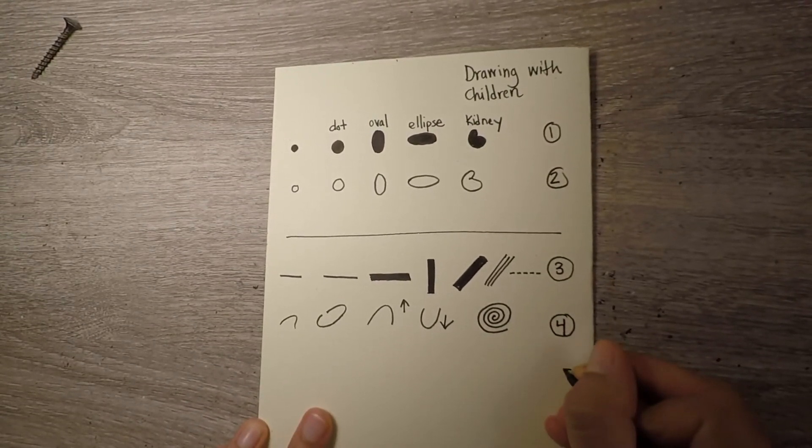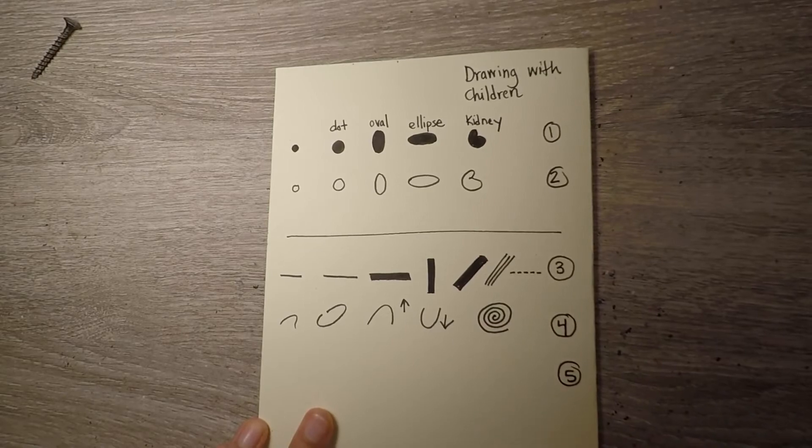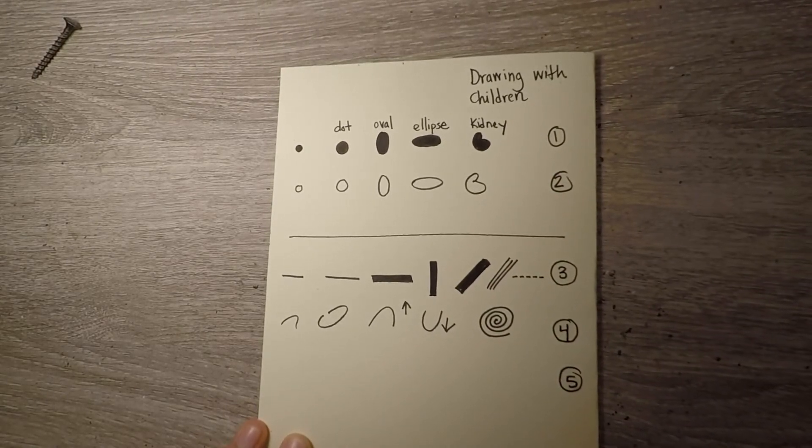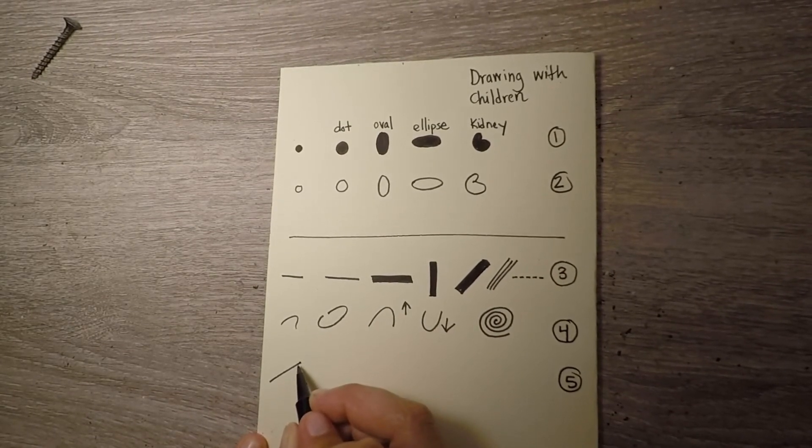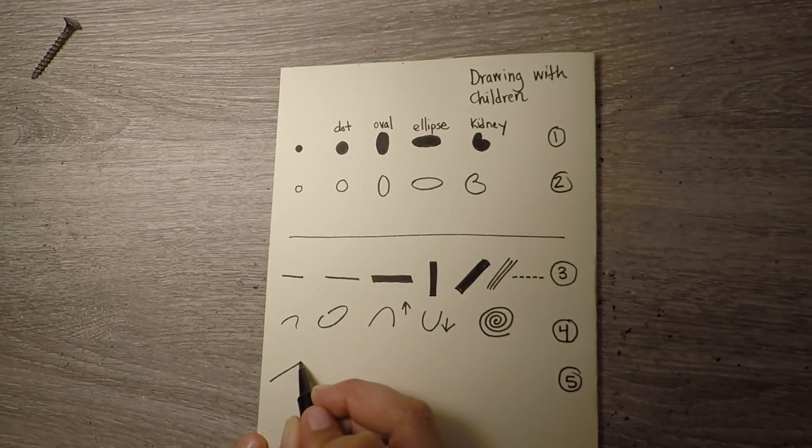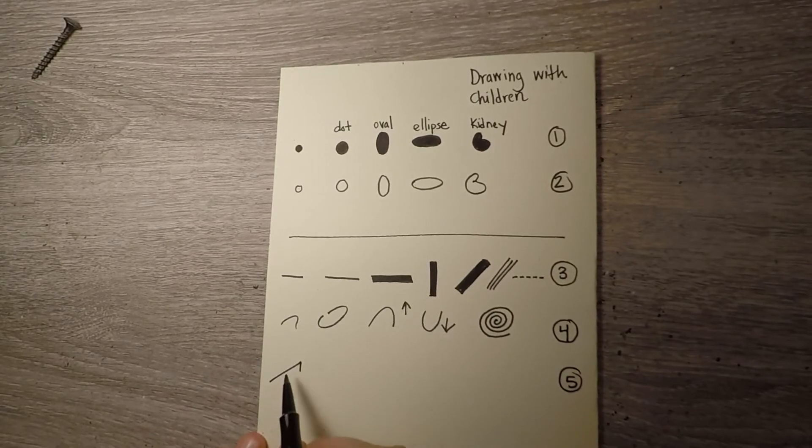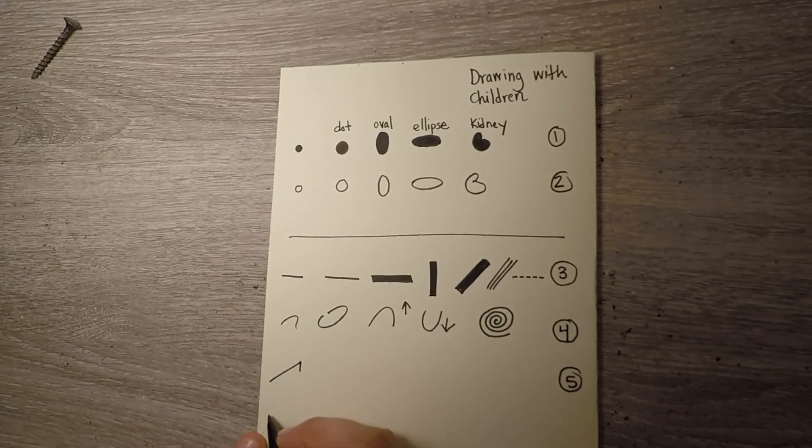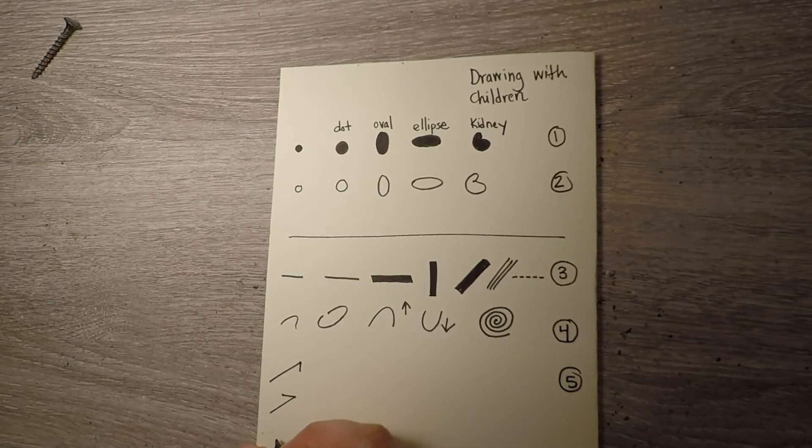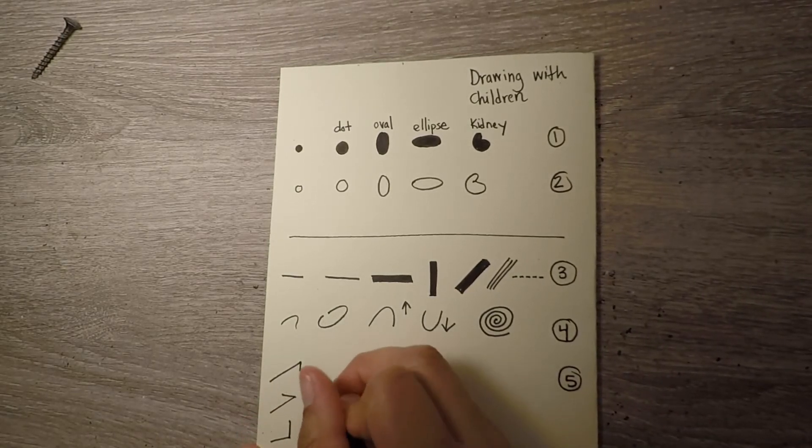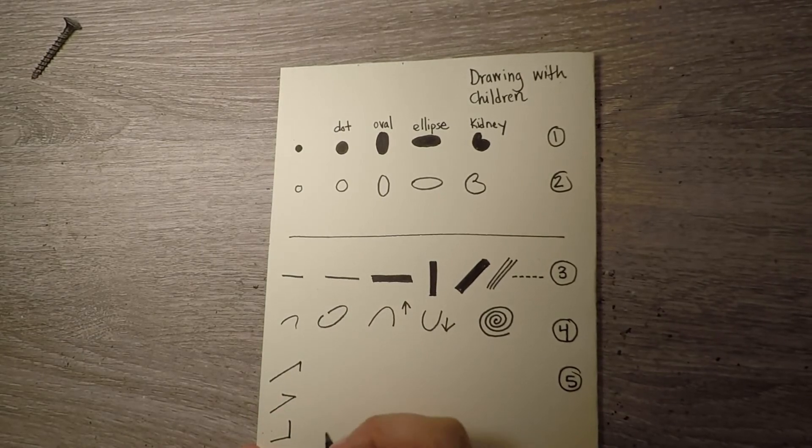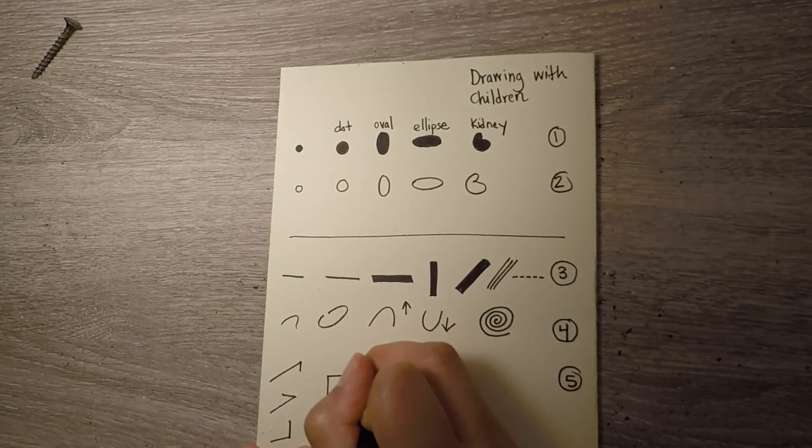And then the last family that we're going to learn about, remember I did say that these are going to be the five elements of shape, is the angled family. So an angle is a straight line and then all of a sudden the next part of it is going in a sharp direction in a different way. For example, this line I could have made it go this way, I could have also made it go this way. You see how it's a sharp change in direction?